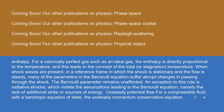For a calorically perfect gas, such as an ideal gas, the enthalpy is directly proportional to the temperature, and this leads to the concept of the total, or stagnation, temperature. When shock waves are present, in a reference frame in which the shock is stationary and the flow is steady, many of the parameters in the Bernoulli equation suffer abrupt changes in passing through the shock — the Bernoulli parameter remains unaffected. An exception to this rule is radiative shocks, which violate the assumptions leading to the Bernoulli equation, namely the lack of additional sinks or sources of energy.